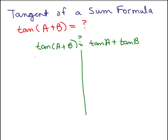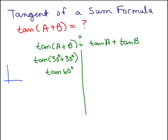Let's see what happens if we plug in particular angles. If it's not true, then that must not be the right formula. Let's try 30 degrees for each. So I'm going to put in 30 degrees for A and 30 degrees for B, which by order of operations is 60 degrees. Over here I'll draw a little picture for the tangent of 60 degrees: sides 1, square root of 3, 2 — so that's square root of 3 over 1, which is square root of 3.